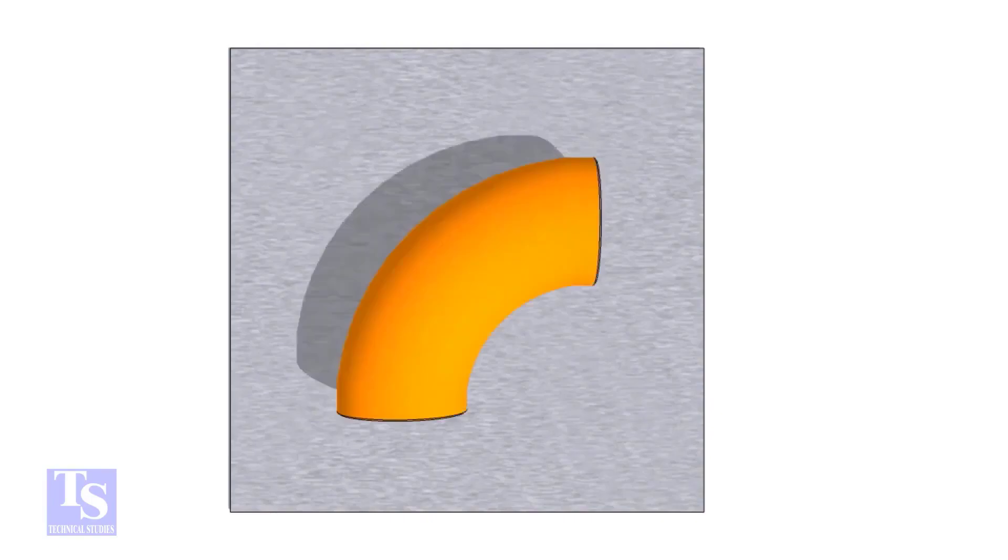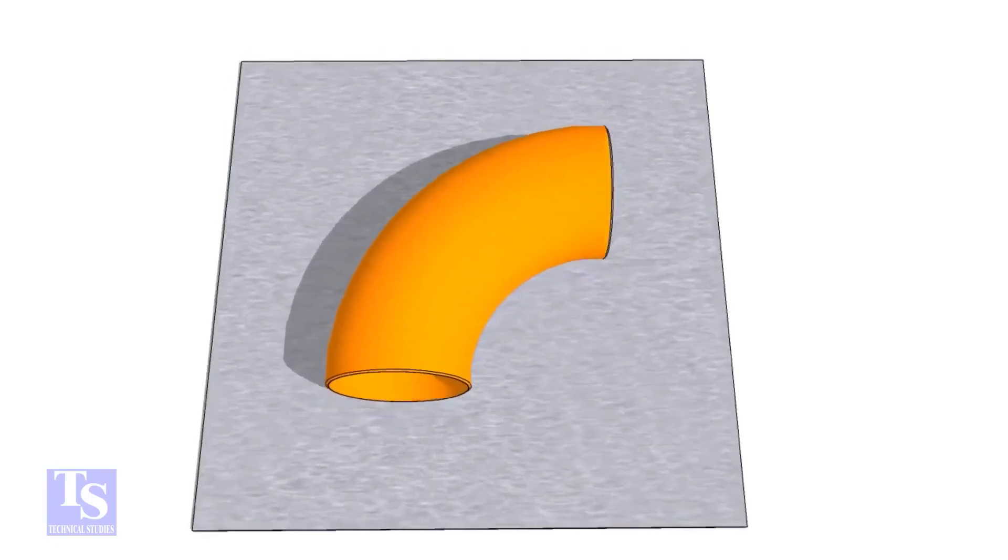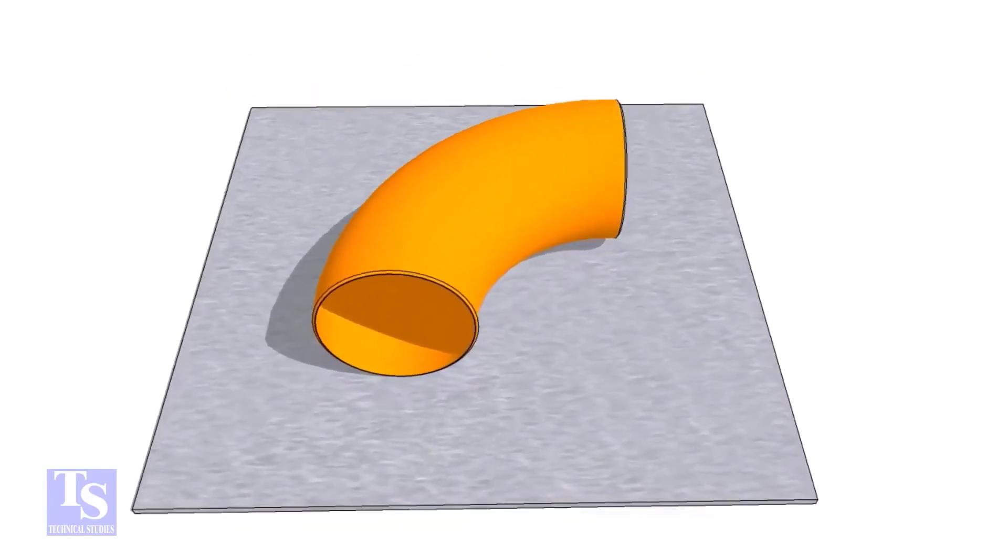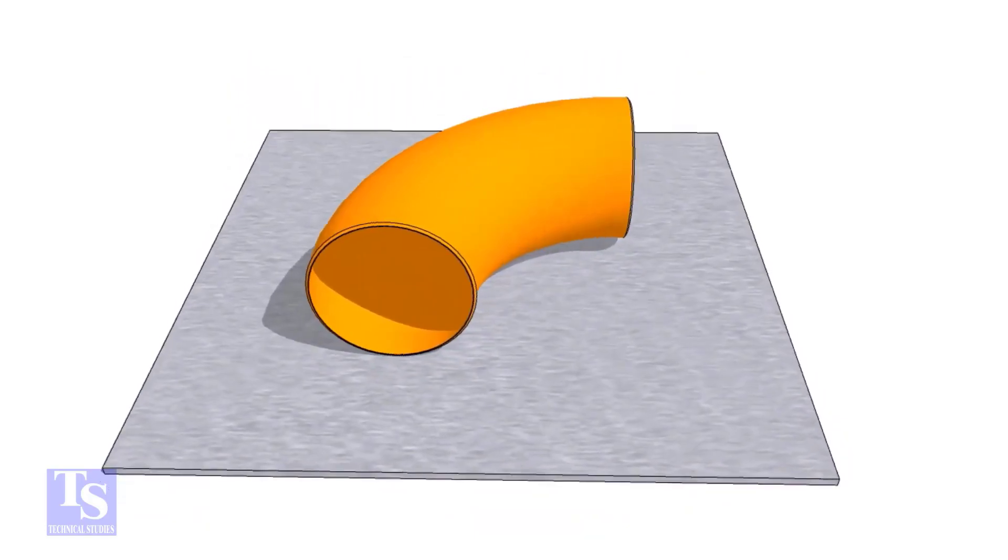First of all, choose a leveled plate and put the elbow on it. Check the outer diameter of the elbow.